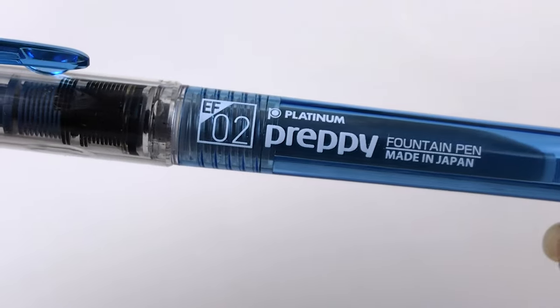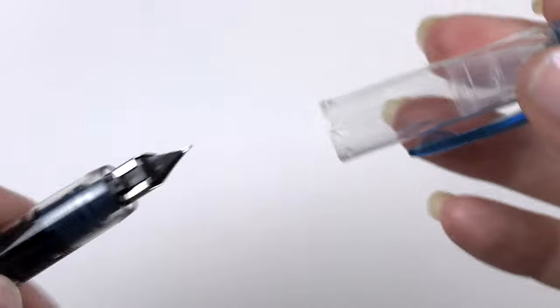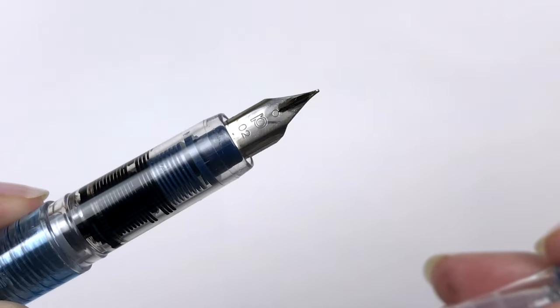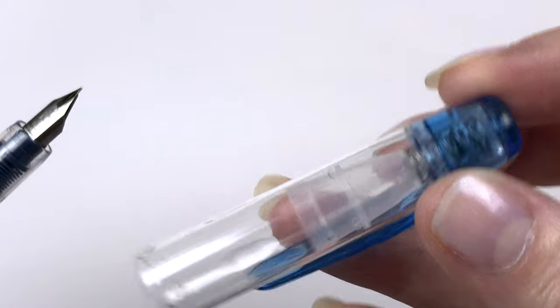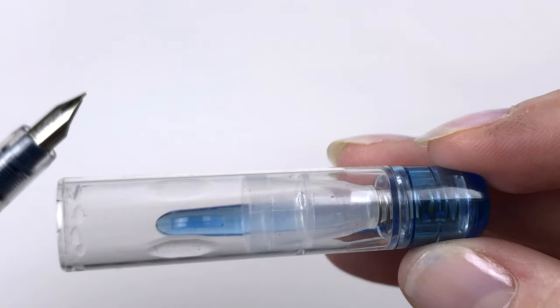The first couple of pens we're going to look at are the Platinum Preppies. These are probably in everybody's beginner guide just because they are so cheap and so reliable. Let's freeze frame on this cap because this is why the Preppy is so awesome. You can see in this cap it has another little cap inside on a spring, and when you close it, it creates a pretty much airtight seal and keeps your nib wet.